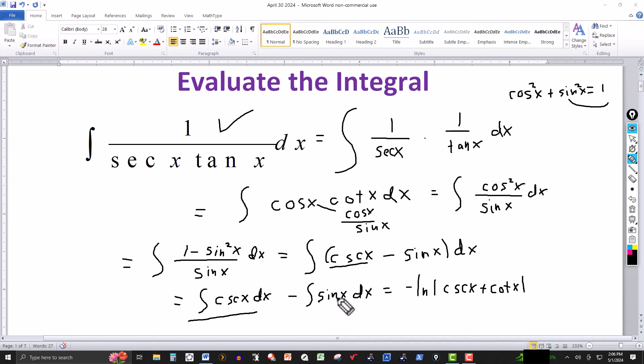The integral of sine of x was minus cosine, but then you've got the negative over here in front, so that's going to make it a plus cosine of x. And then of course you have your constant of integration.